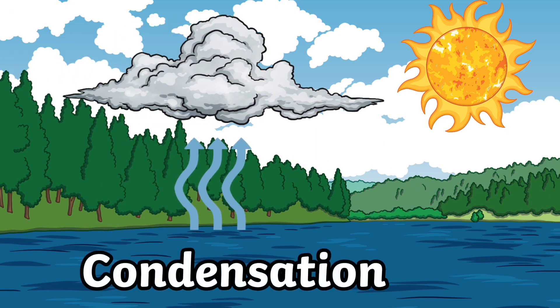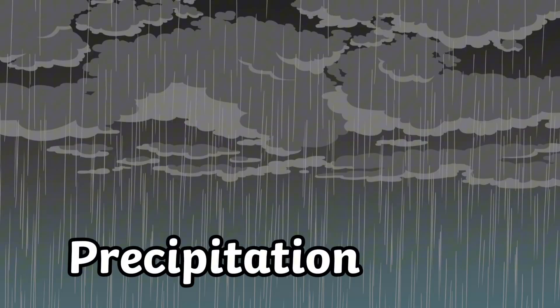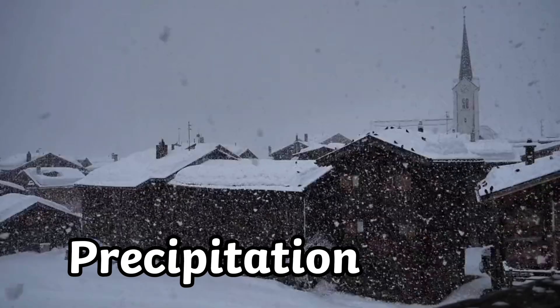The water vapor forms big dark clouds. This process is called condensation. When the clouds get too heavy with water, they release it back to the earth as rain or snow.